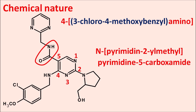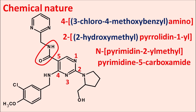At the second position, a pyrimidine ring system is present — 2-pyrimidinyl — which is having a hydroxymethyl group at the second position, written as 2-hydroxymethyl. That is the complete name of avanafil. So avanafil is a pyrimidine-5-carboxamide derivative.